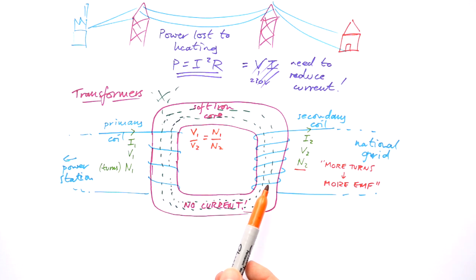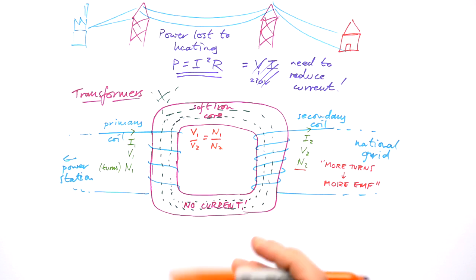So the voltage has increased, but we know that we can't get energy for nothing. If this transformer was 100% efficient, then the amount of power supplied by the transformer by the primary coil should be the same as the power given to the secondary coil.